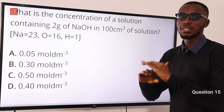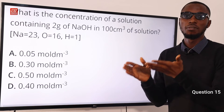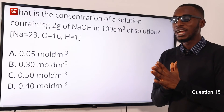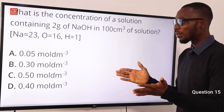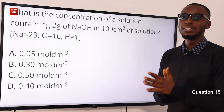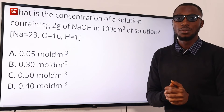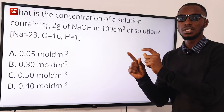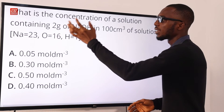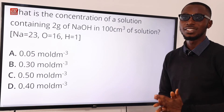The molar mass is 40 g/mol and the mass concentration is 20 g/dm³. So molar concentration equals 20 over 40, which is 1/2, and that is 0.5 mol/dm³. The correct option is option C, 0.50 mol/dm³. This is a question on molar concentration, which equals mass concentration over molar mass.